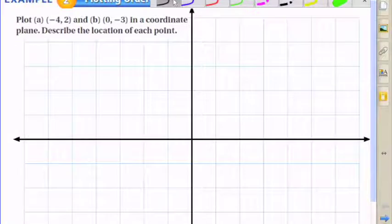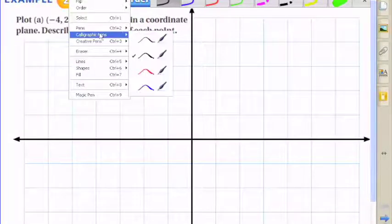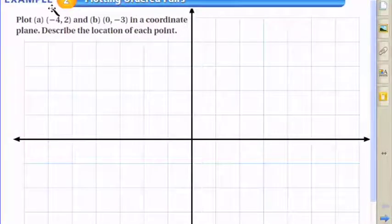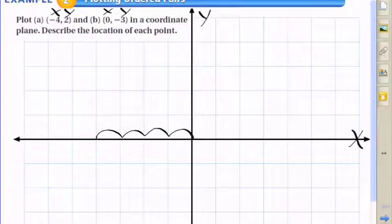We're asked to plot the point (-4, 2) and also (0, -3). It's important to note all the values in the problem: x values are -4 and 0, and the y values are 2 and -3.